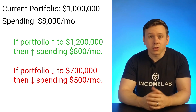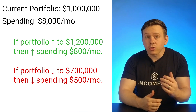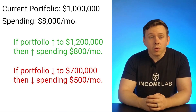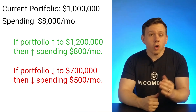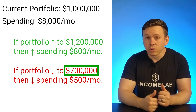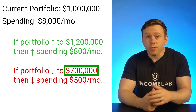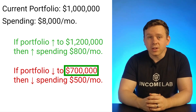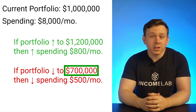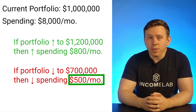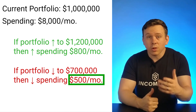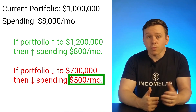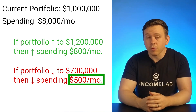Imagine the peace of mind this could give a retiree. If the market starts declining, this individual now knows that, first, a cut in spending isn't even recommended until their portfolio falls all the way to $700,000. And second, even if the portfolio falls all the way to $700,000, the suggested spending decline is only $500 per month. Having a plan like this in place in advance can provide a lot of peace of mind relative to just blindly watching portfolio values and probability of success levels fall.